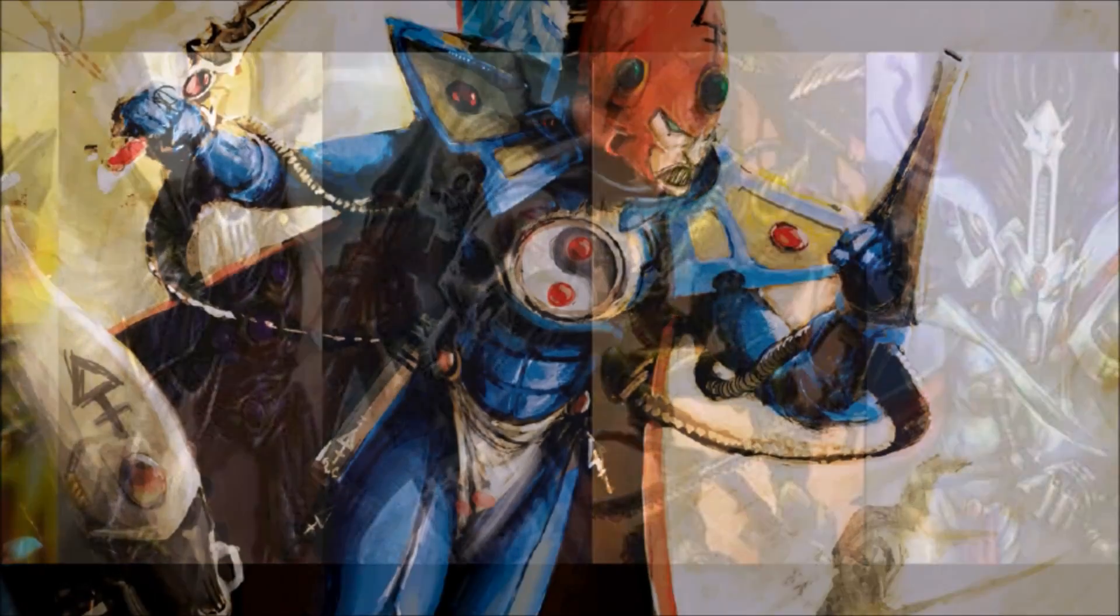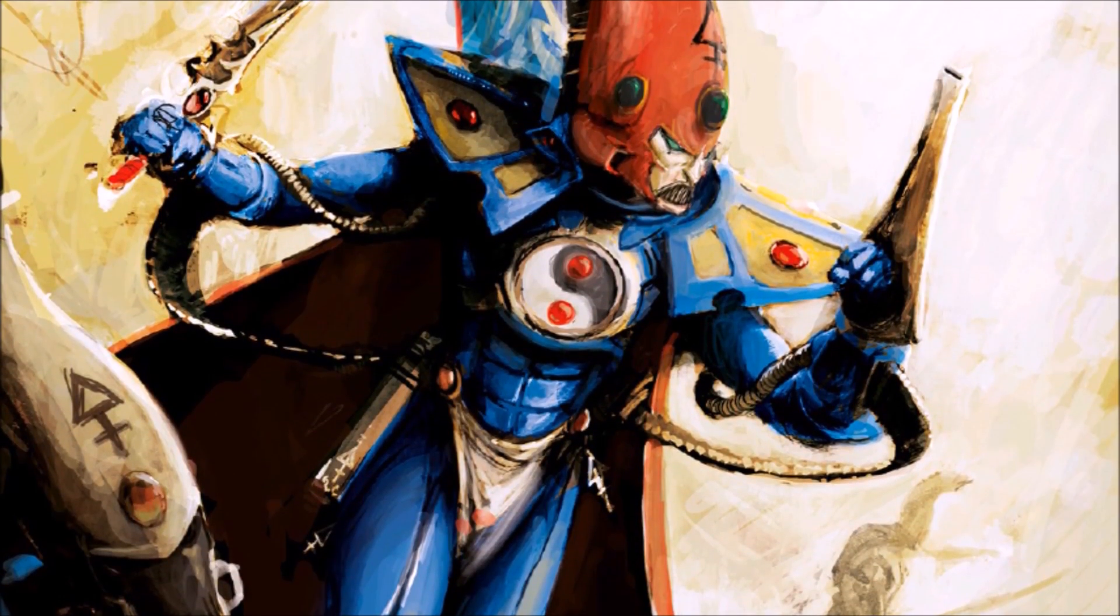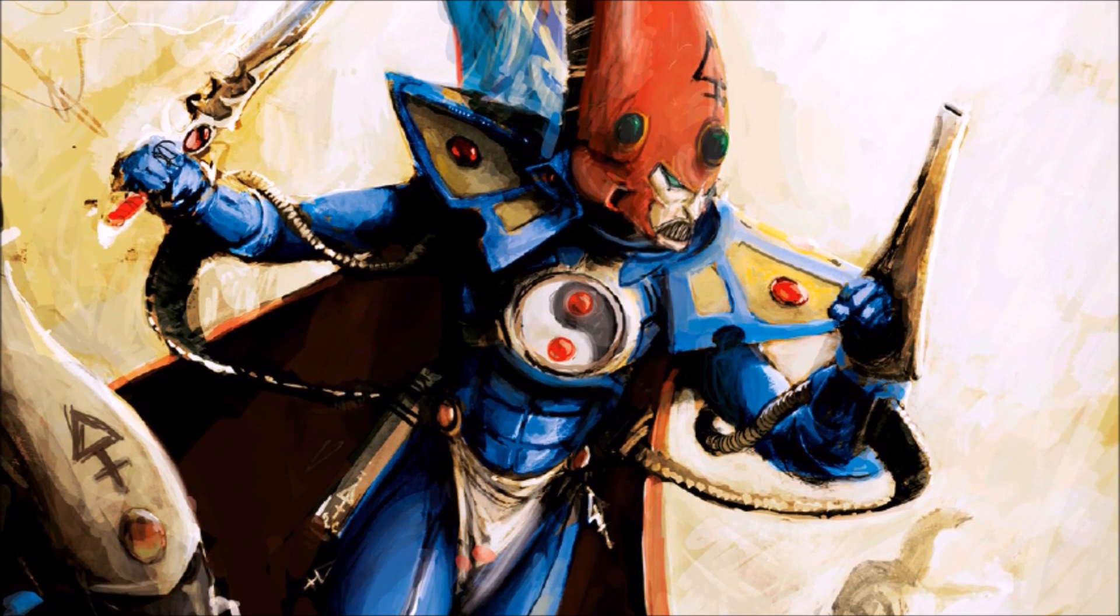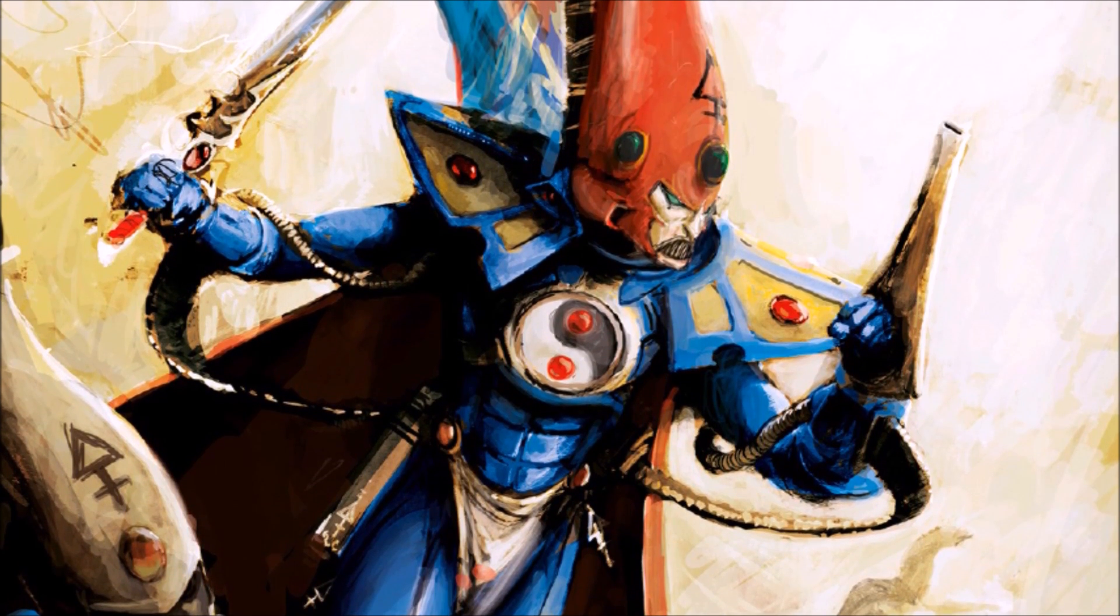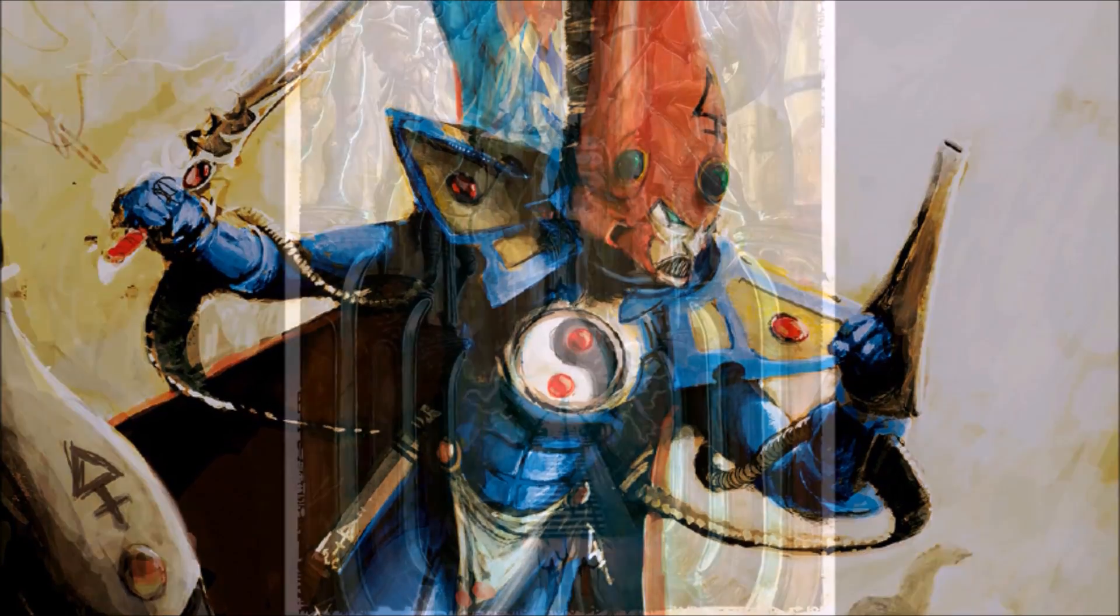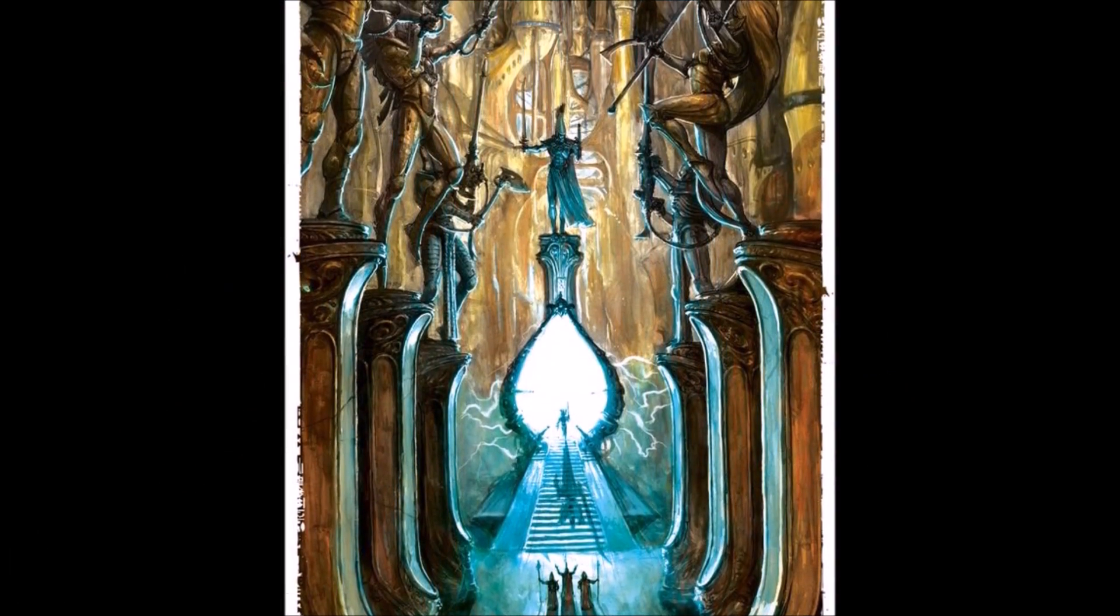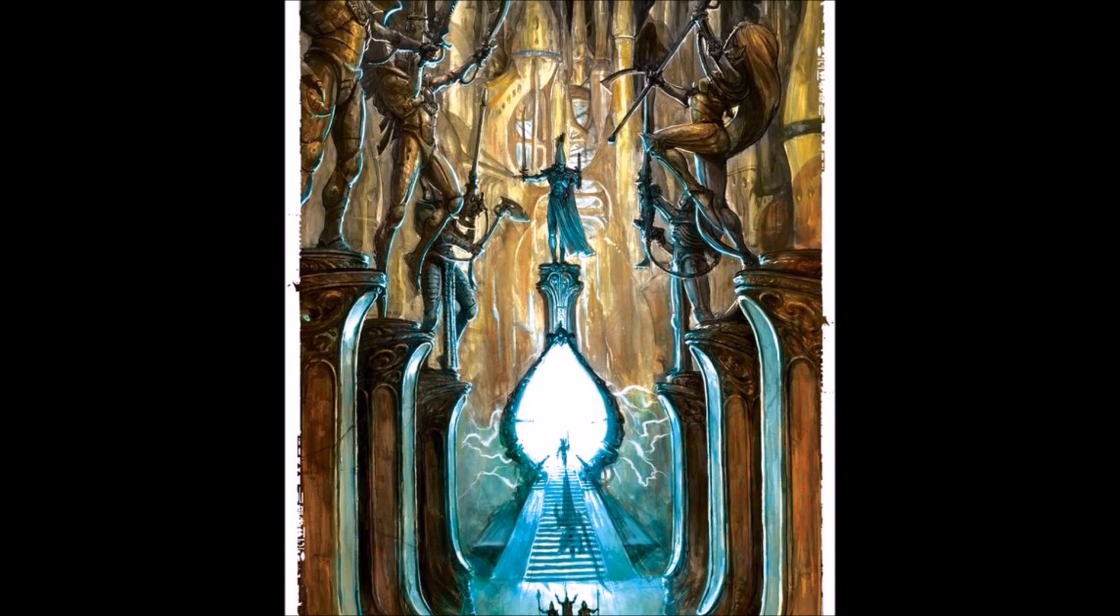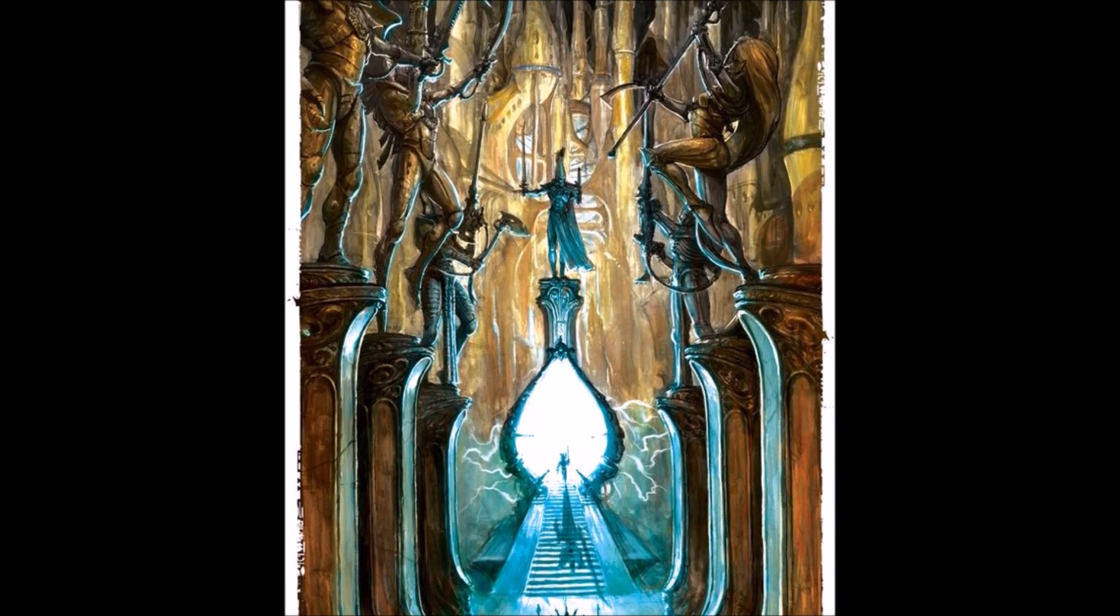Eldar legends tell that it was Asurmen who would become the first of the Phoenix Lords when he trained the first of the Aspect Warriors, the Asurya, in the path of the Warrior, and that the Asurya would eventually found their own Aspect Warrior shrines, to pass the skills they have learned to students who will continue to utilize their technique in the art of war.